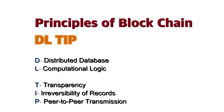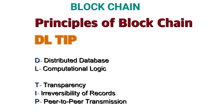Now let's move to the next topic, which is Blockchain. As mentioned at the start of the video, we will cover two topics today: Artificial Intelligence and Blockchain. The Principles of Blockchain and the mnemonic for the same is 'DL TIP' — like a driving license tip. D stands for Distributed Database, L for Computational Logic, T for Transparency, I for Irreversibility of Records, and P for Peer-to-Peer Transmission.